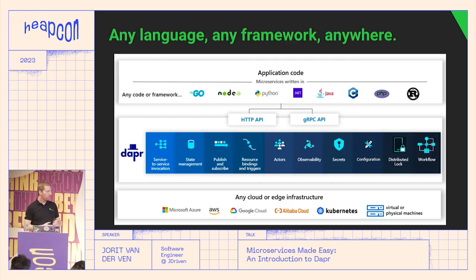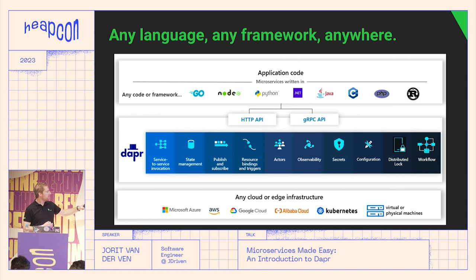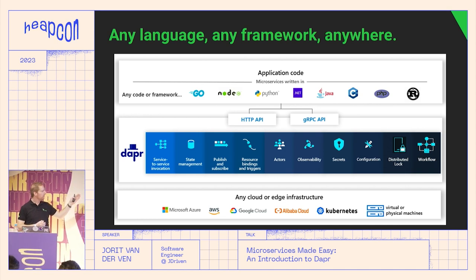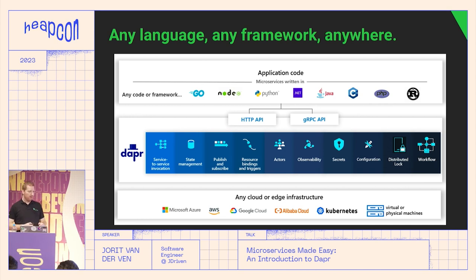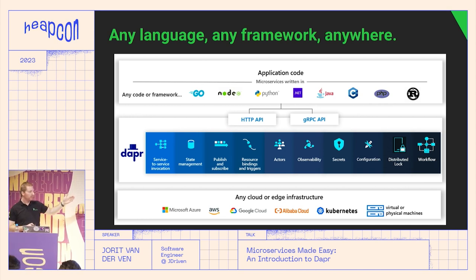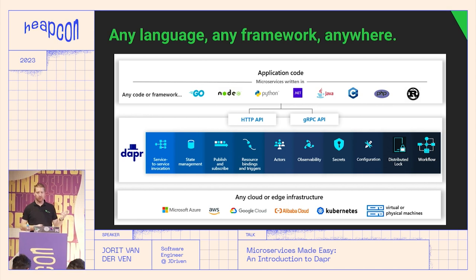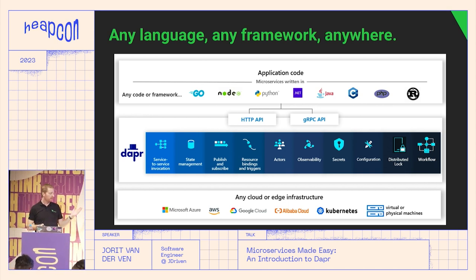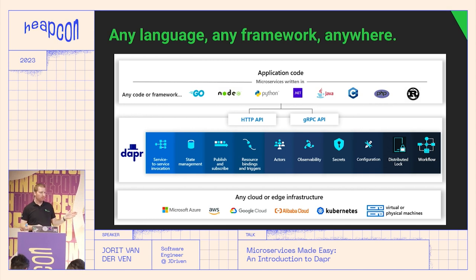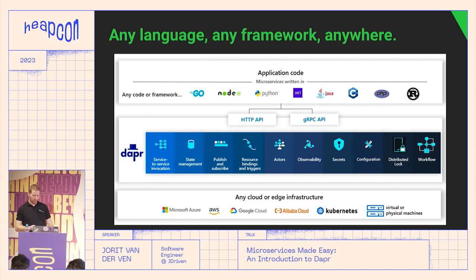Dapr provides several building blocks to provide functionality to your application. You can call them via either an HTTP API or a gRPC API. Because of that API, it doesn't matter which language your application is built in — Java, .NET, Go, or any other language. Because Dapr was built in Go, it can basically run on everything: all clouds are supported, Kubernetes, bare metal machines, or your local development machine.